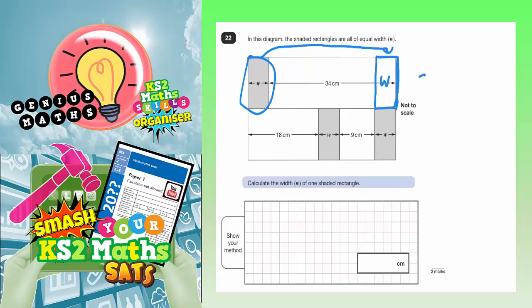So, if this W here was level with this one here, then because they're the same size, you can basically ignore them because they're the same size, so they would cancel each other out.